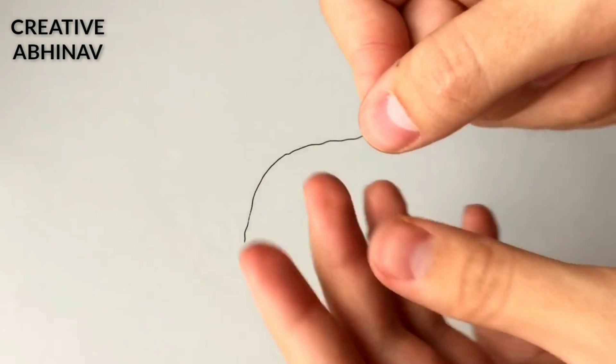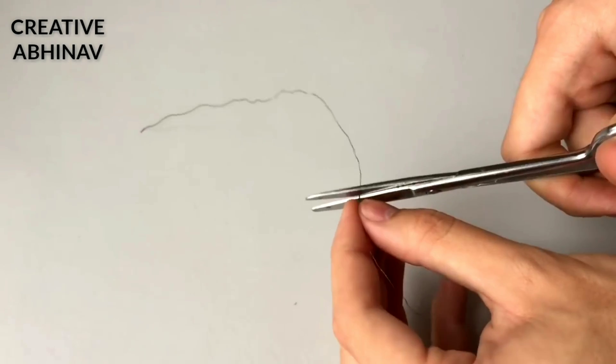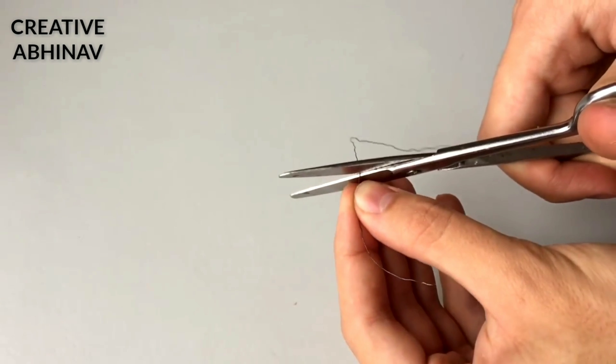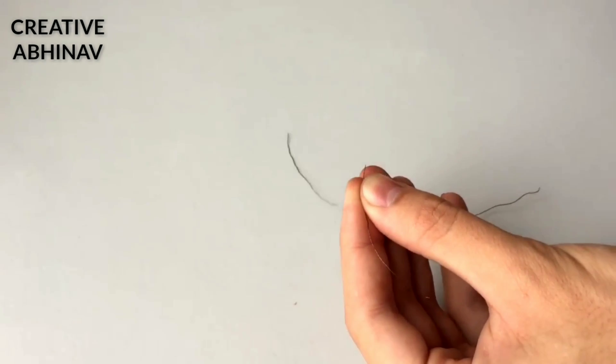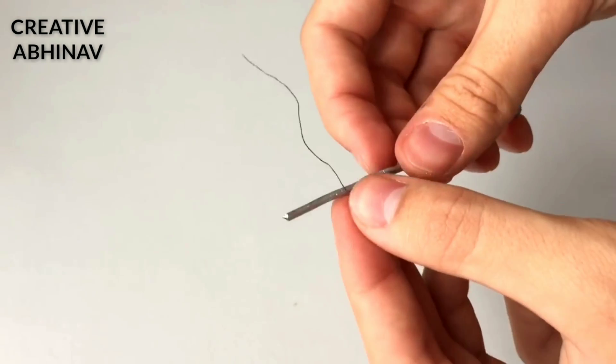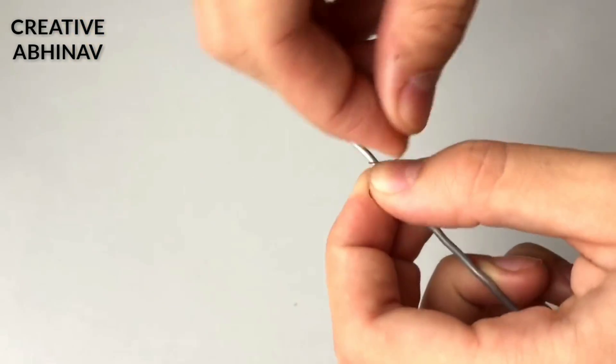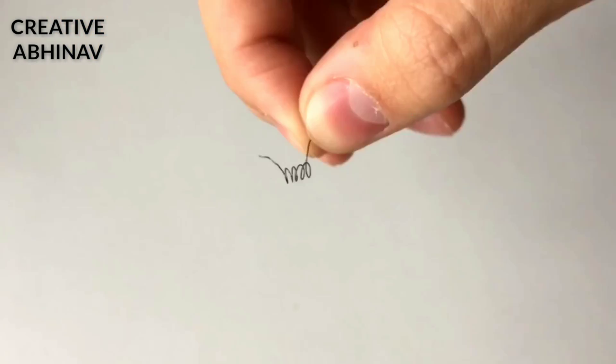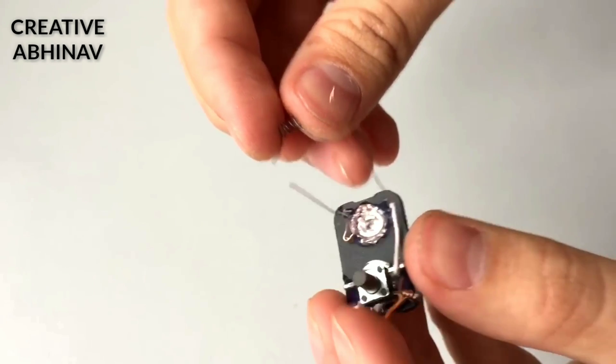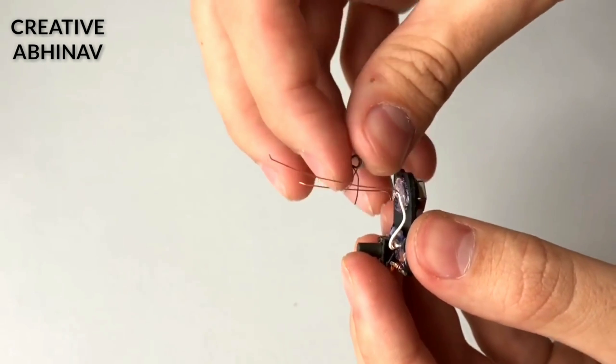Then we have to make a coil with nichrome wire like this. Then we have to connect this coil with the 9-volt battery connector and on-off switch.